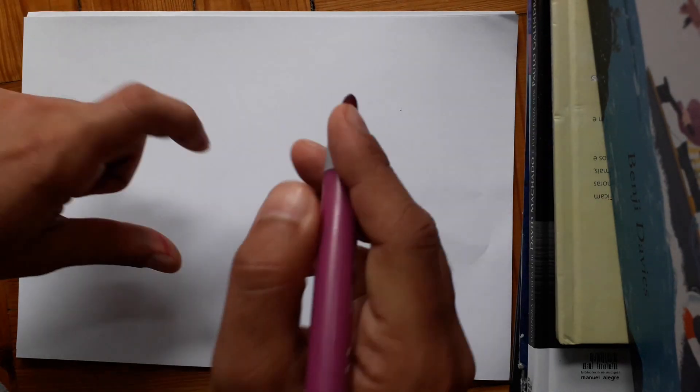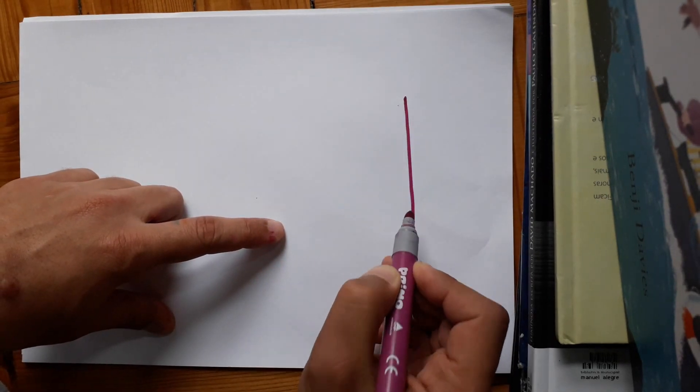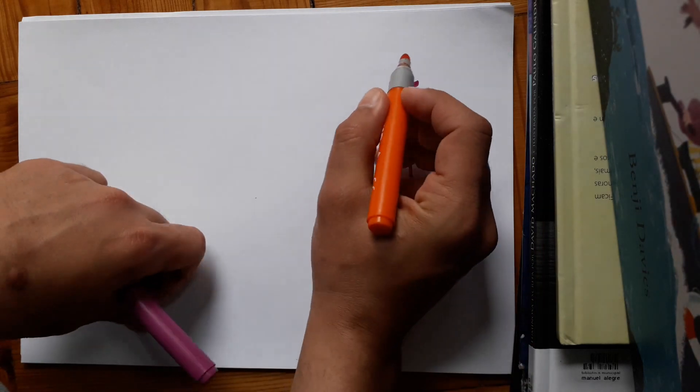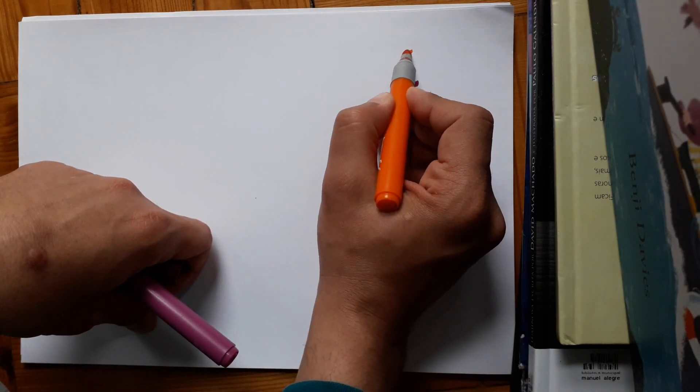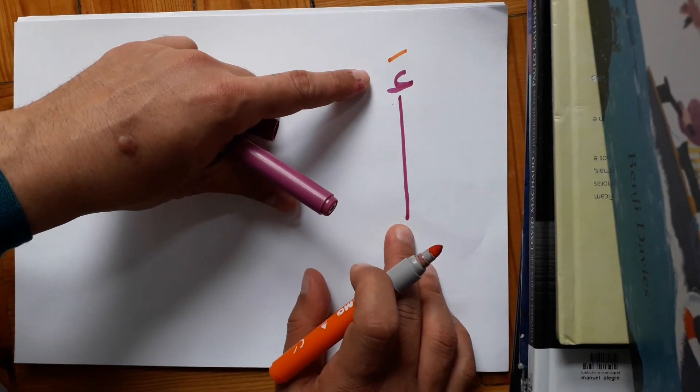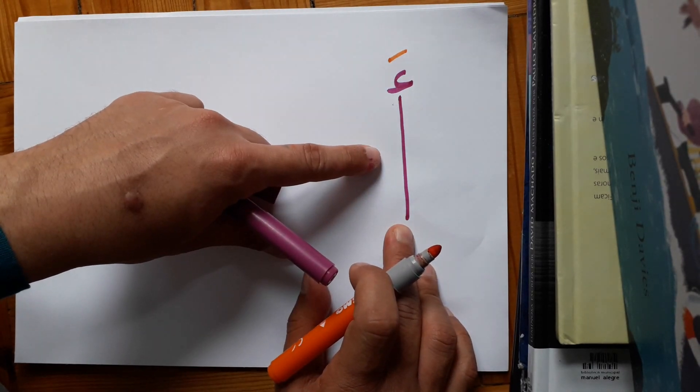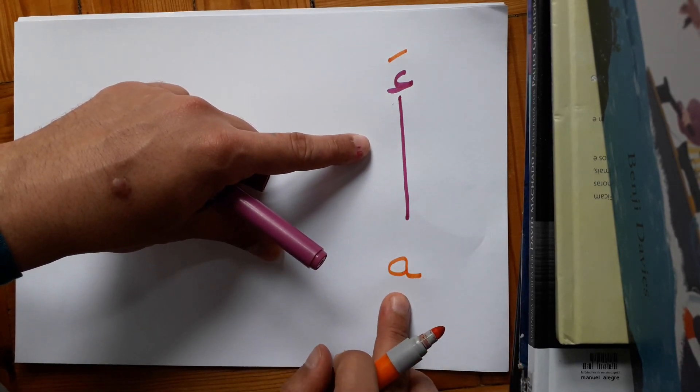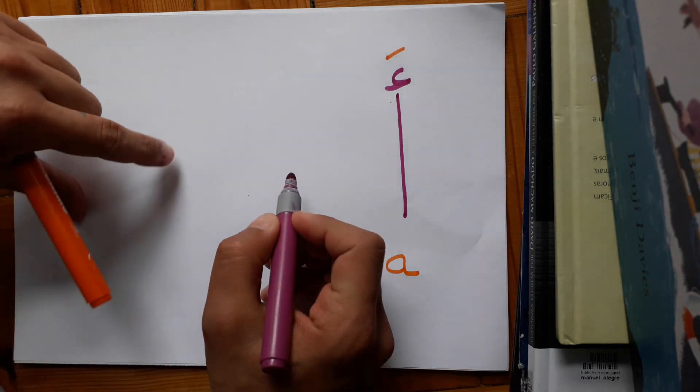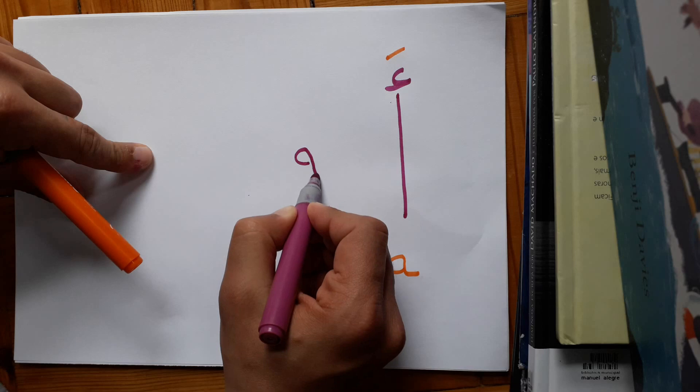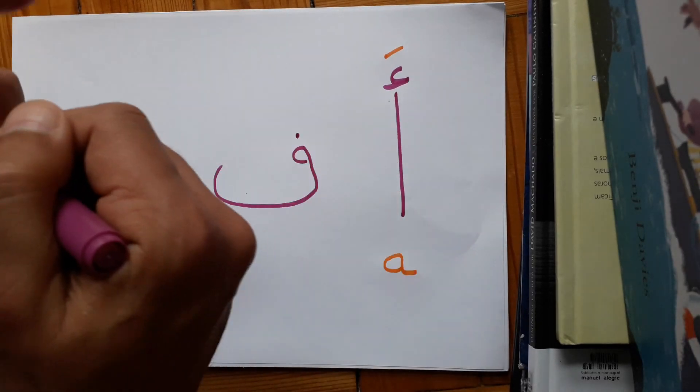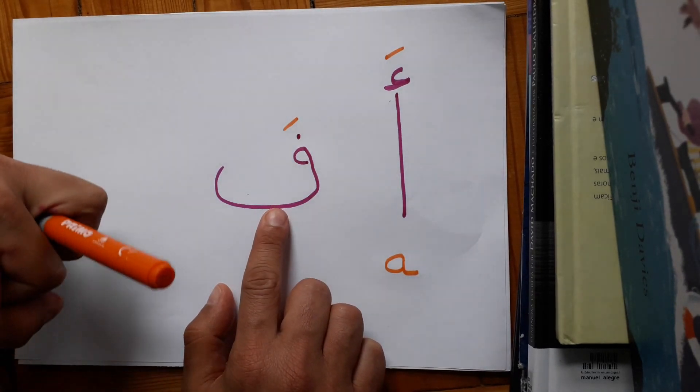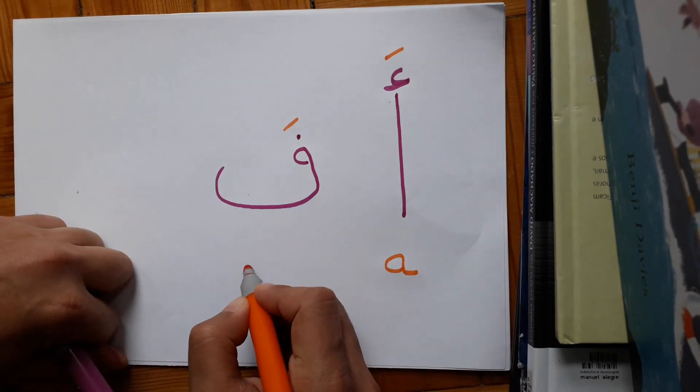So the first letter here, that beautiful one. I'm not gonna say the name of the letter, I'm just gonna say the sound of it. And I will put this mark on the top of it, so the sound of that one is 'a', like this. The second one is with this mark, so it will be 'fa', like this.